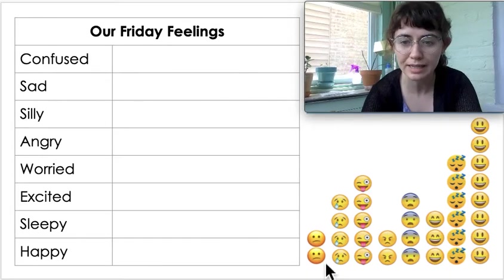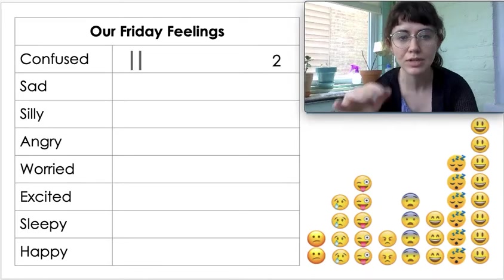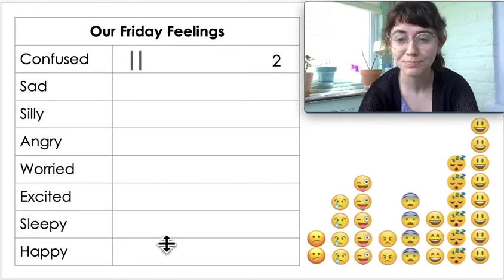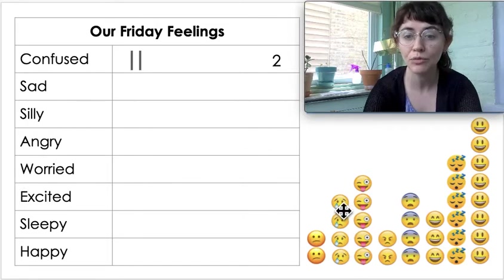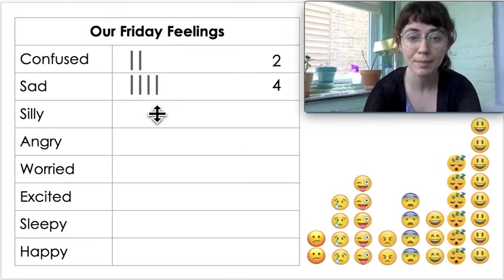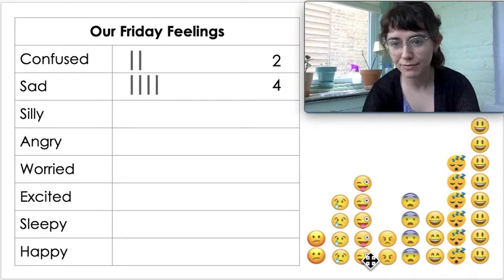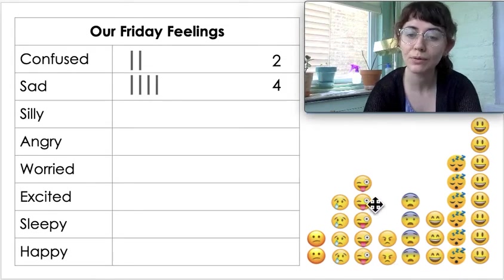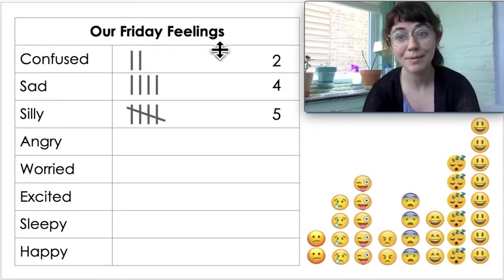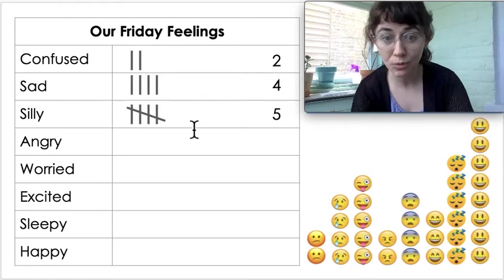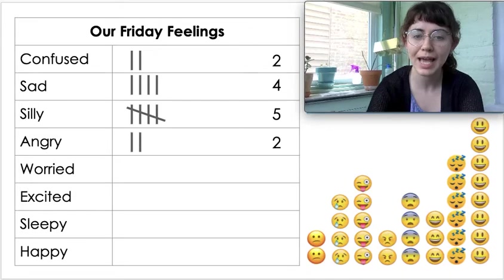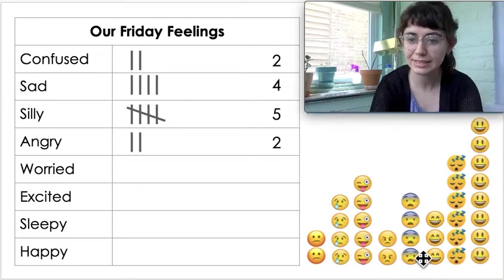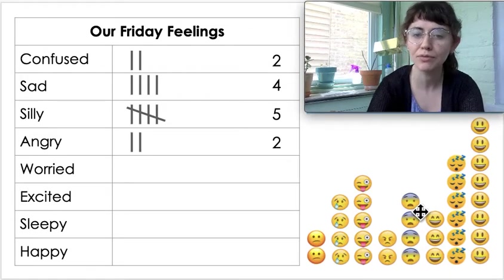For confused, I'm going to do two tally marks and write the number two. For sad, I have four, so that's four tally marks. Then for silly I have five, so remember for tally marks for five we go across to show that group of five. For angry, we have two again. For worried, we have four.